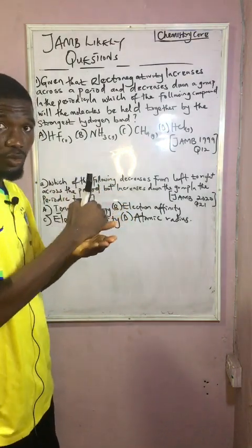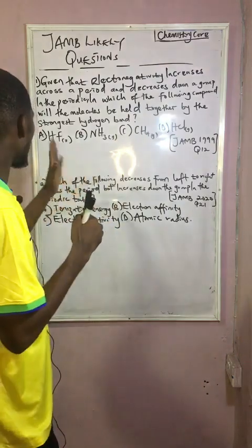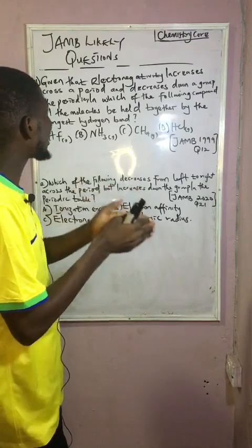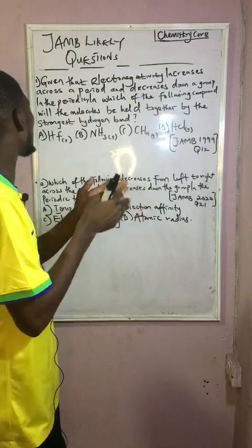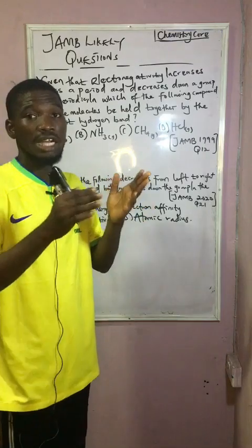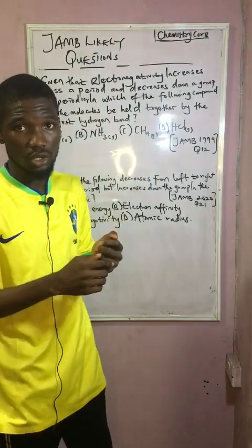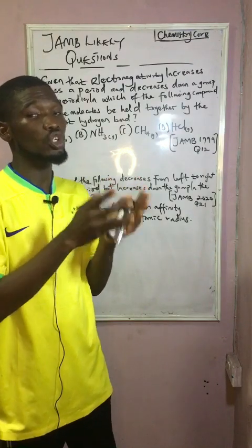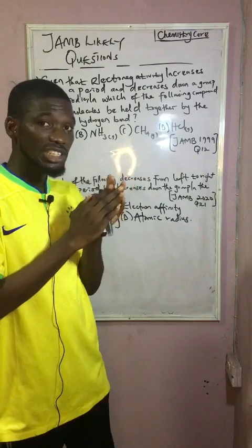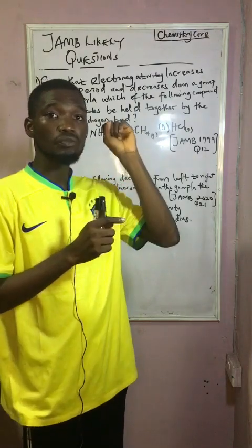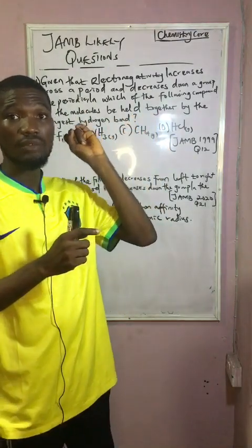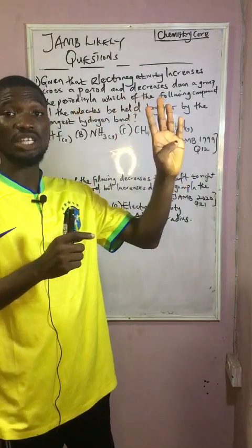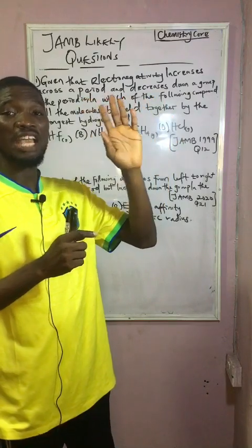The first kind of question I'll talk about involves properties that increase across the period and decrease down a group in the periodic table. The modern periodic law states that the properties of elements are a periodic function of atomic number. The periodic trends we have include: atomic radius, ionization energy, electron affinity, electronegativity, ionic radius, and metallic character.